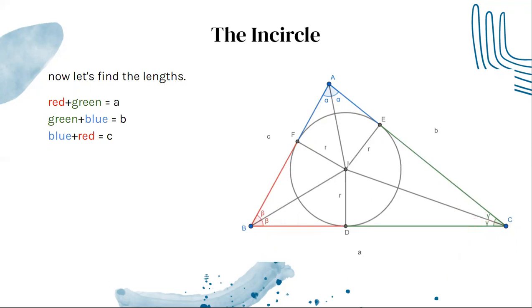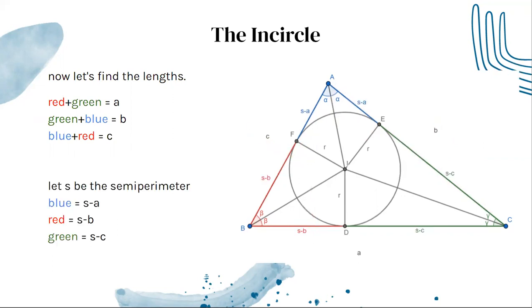Now let's try to find the red, green, and blue lengths. We know that red plus green is equal to A, green plus blue is equal to B, and blue plus red is equal to C. We can solve this as a system of equations to get that if S is the semi-perimeter or half the perimeter, blue is equal to S - A, red is equal to S - B, and green is equal to S - C.